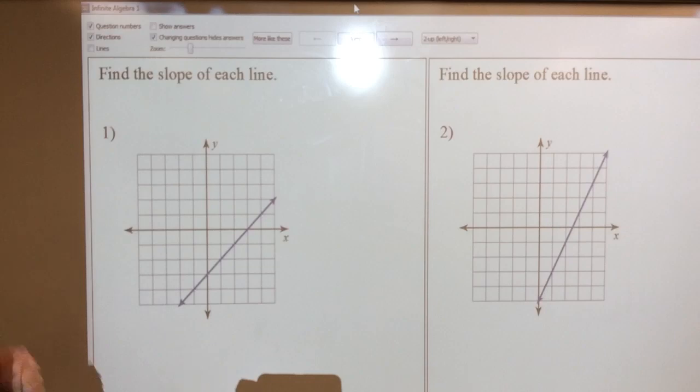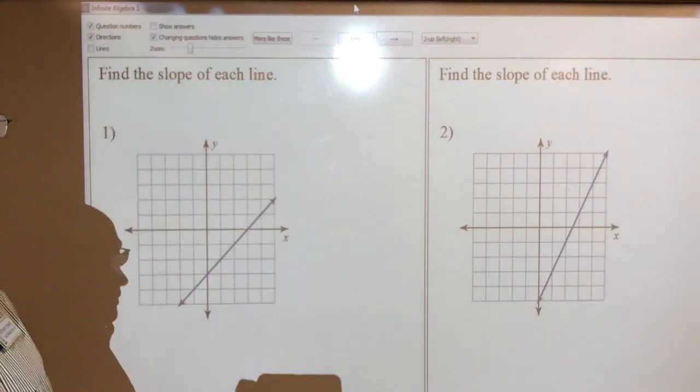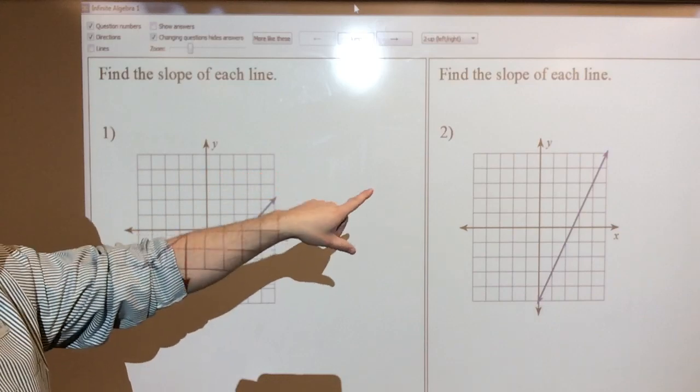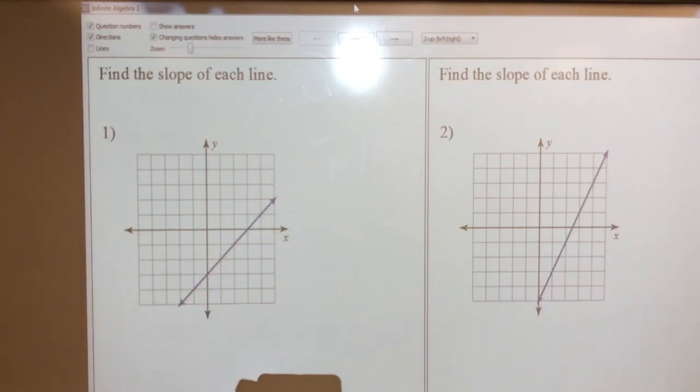Alright, so interim review part 2. Go ahead and tell me what the slope intercept form of both of these lines are, and then I'll add a little bit onto it. So go ahead and pause me and work it out.